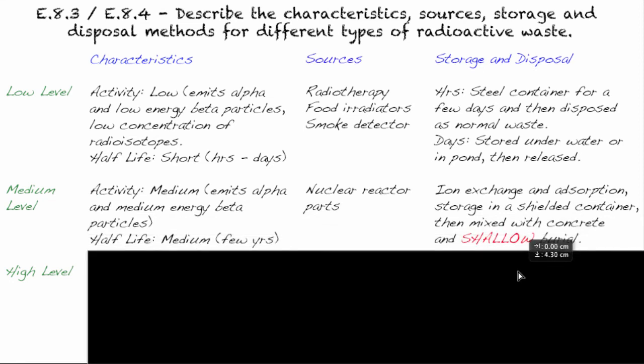Our next one is medium level. The activity is medium. They're going to emit alpha particles as well, and medium energy beta particles. The half-life is going to be medium, so upwards of a few years. You'll find that parts from nuclear reactors, like what you saw in the video, some of the parts that were in contact with the fuel rods, those types of things are what we call medium-level radiation.